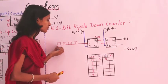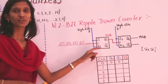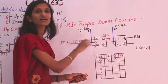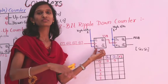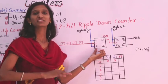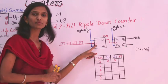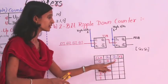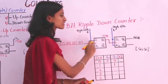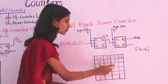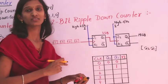Q1 represents the LSB and Q2 represents the MSB of the binary number. When the first clock cycle is applied to the first flip-flop, it enters toggling mode. Initially Q1 was 0, so it converts to 1 due to the toggling operation.